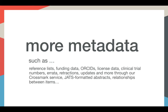Some of our members go above and beyond providing basic bibliographic metadata. They also provide reference lists, information on who funded the paper, license information such as links to a Creative Commons license for open access content, information about errata or retractions, abstracts, and relationships between items. For example, you can link a preprint with the published version of the content in the Crossref metadata.